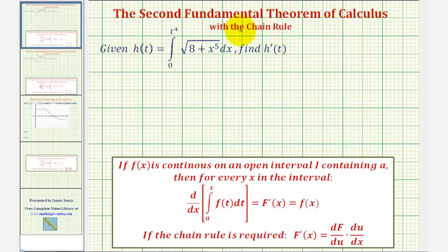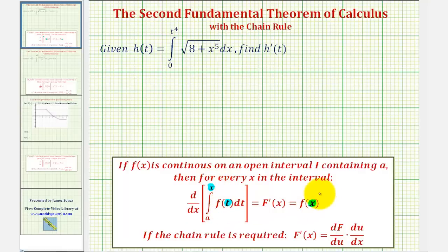To do this, we'll apply the second fundamental theorem of calculus stated here below. We'll notice how the derivative of this integral of f of t from a to x is equal to f of x. We can think of the derivative and integral undoing each other, and therefore to evaluate this, we substitute x into the integrand giving us f of x. Notice that the lower limit of integration is a constant and the upper limit of integration is just x.